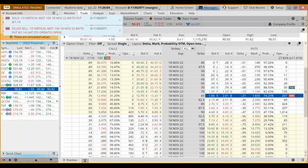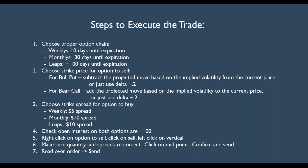So let me recap. I chose the proper option chain — Medtronics, about 100 days to expiration, giving me between $1 and $1.50 credit. I chose the strike price using a delta of 0.2, which was the 80. I went 10 points apart to the 70 — selling the 80, buying the 70. I checked open interest and it was okay. Then I right-clicked the option to sell, clicked vertical, made sure I was at the midpoint, confirmed and sent. That's how you execute a credit spread trade at the midpoint step by step.